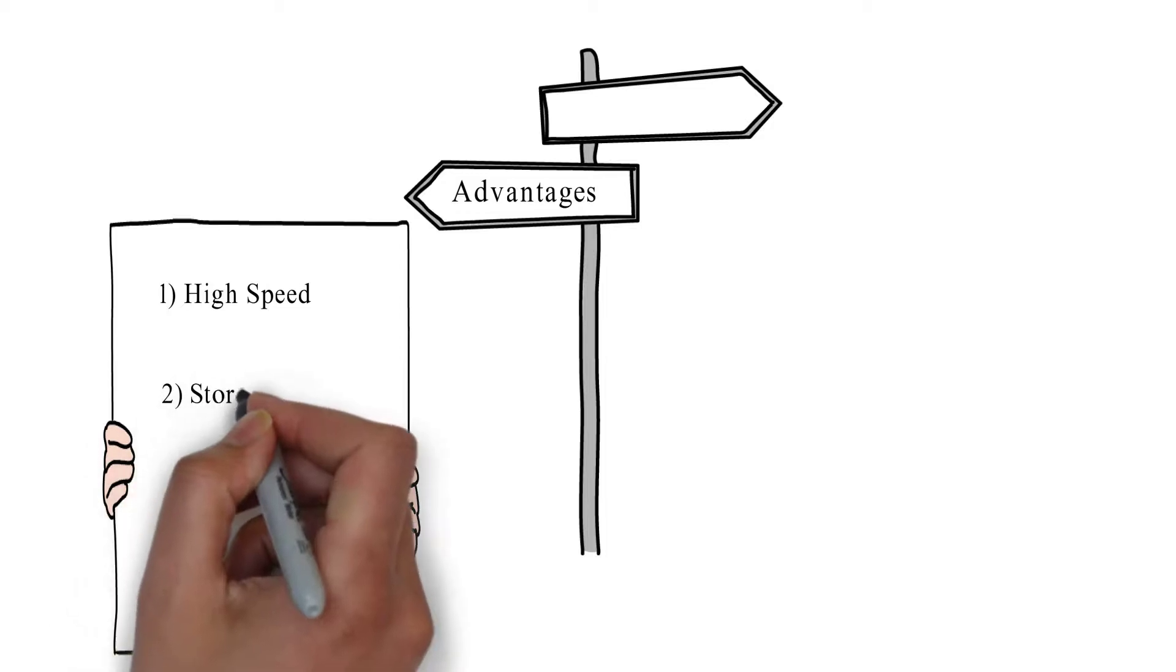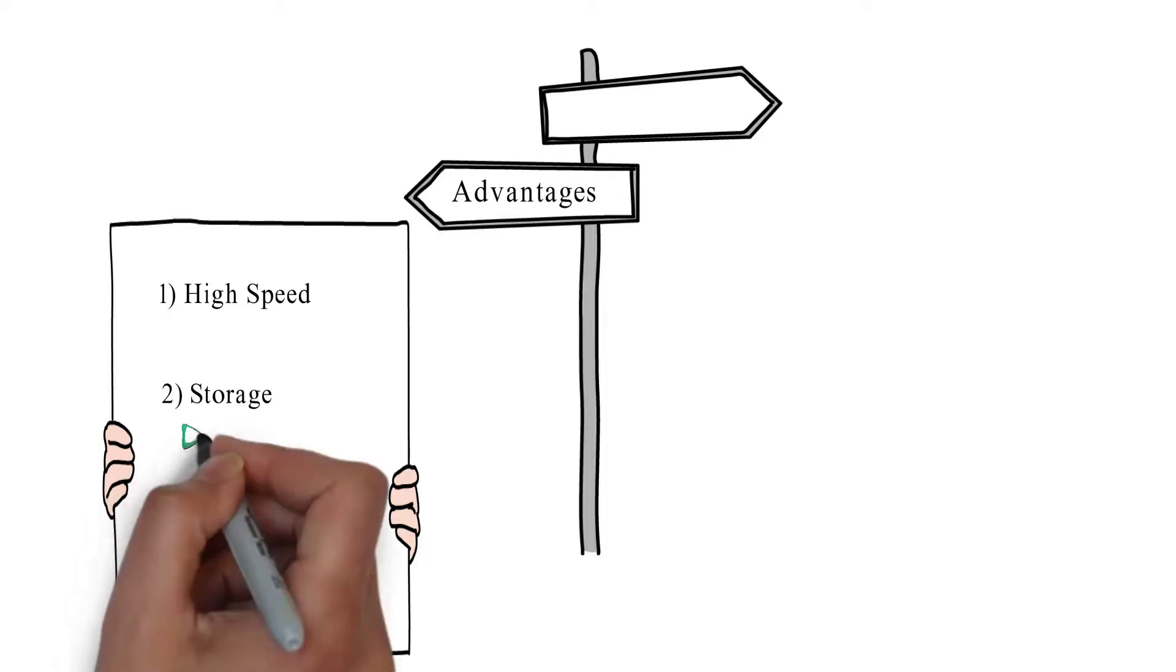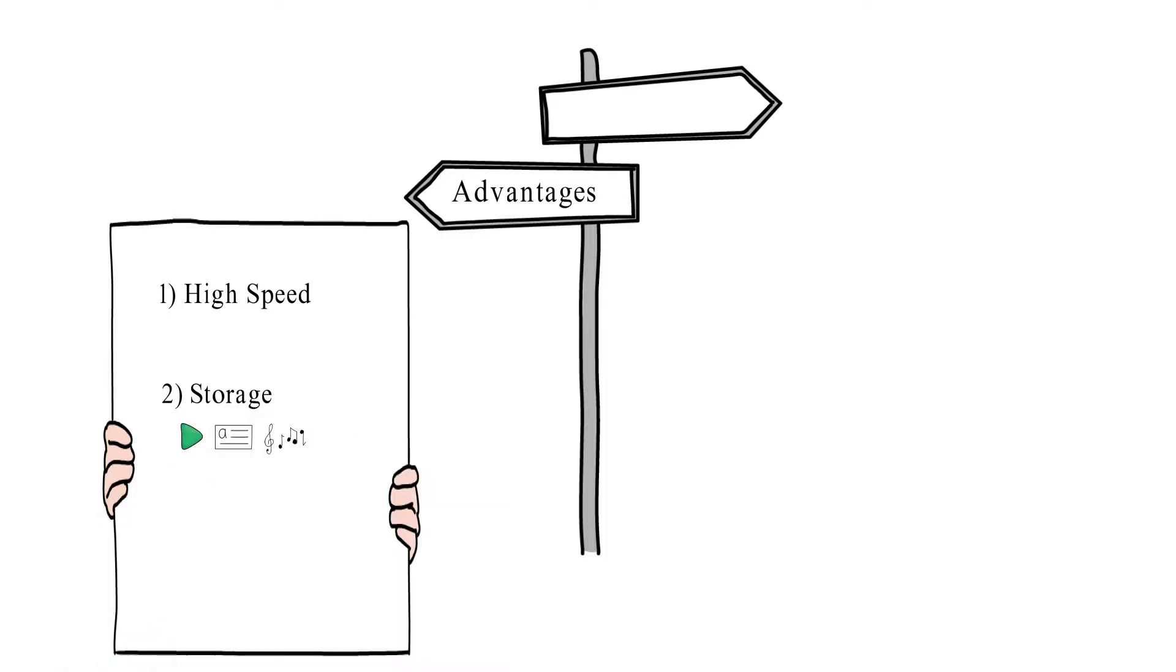Number two, storage. Computer can store large amounts of data. It can store any type of data like images, videos, text, audio, etc.